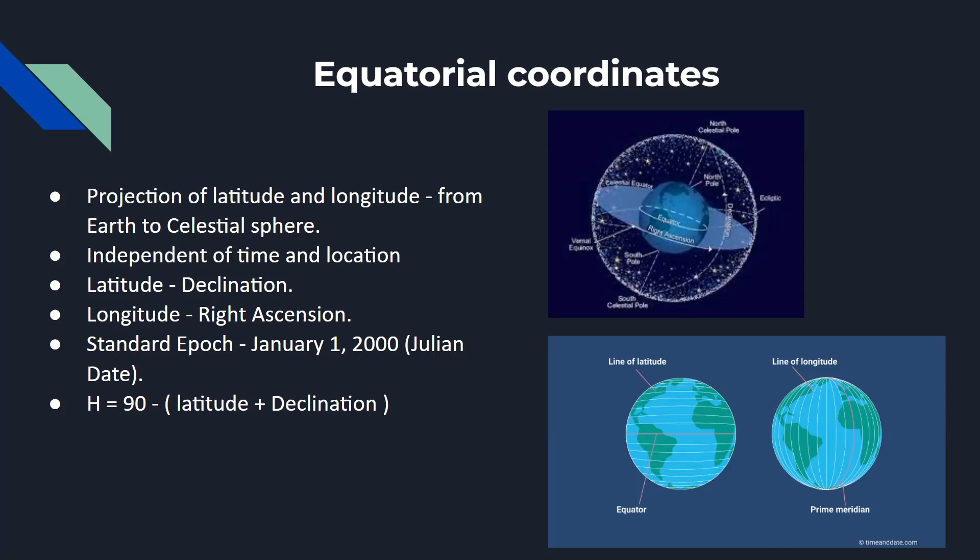The projection of latitude is nothing but declination, which is measured in degrees. And the projection of longitude is known as right ascension, which is measured in hours. So the intersection will help you find the object in the equatorial coordinate system.